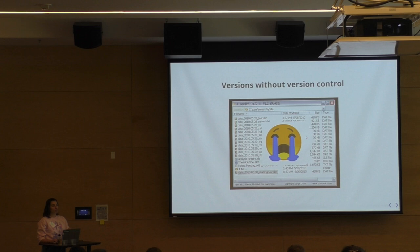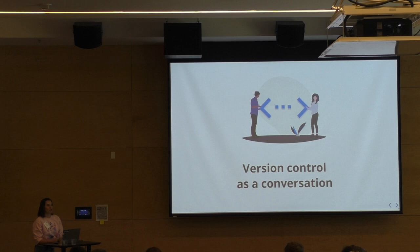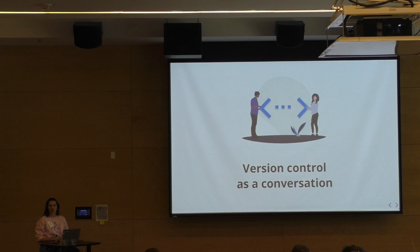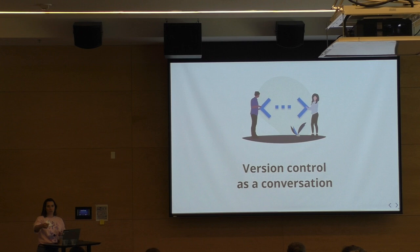I think of version control as a conversation — really, really helpful. It's a conversation with yourself in the future, a conversation with your collaborators. It's a way to make sure you're clear about what took place over the life cycle of your project, by doing little check-ins: this is what the data looked like at this point, this is what I changed, this is what it looks like now. That's what Git and GitHub are really amazing for.